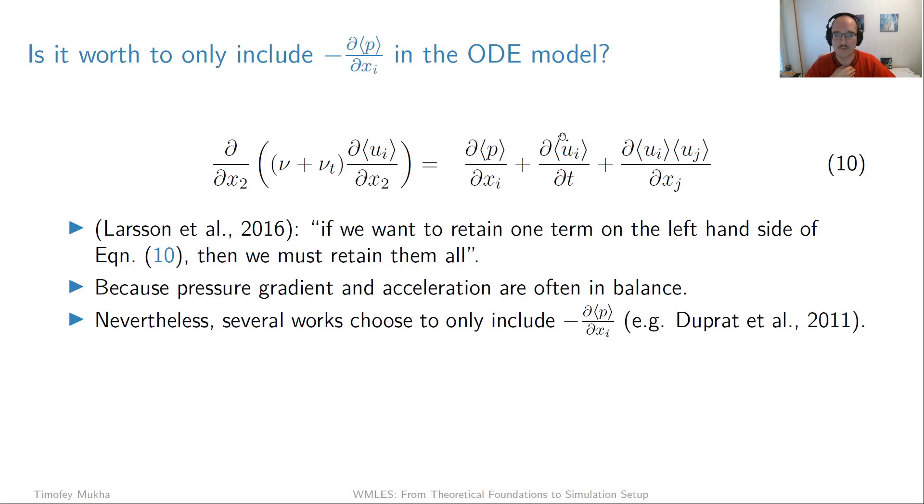This leaves the question of whether it's appropriate to only consider the pressure gradient term in an ODE model. There's a conflict of opinion in the literature. In a review paper by Larsson et al., he says very clearly that if we want to retain one term on the right-hand side of this equation, then we must retain them all. The argument is that the pressure gradient and acceleration term often balance each other out. If you only retain one, you can get a completely unrealistic representation of your flow.